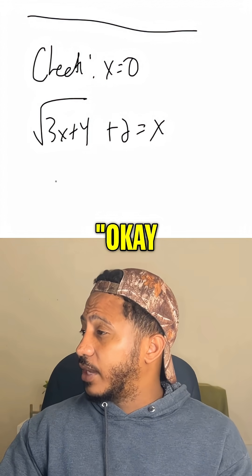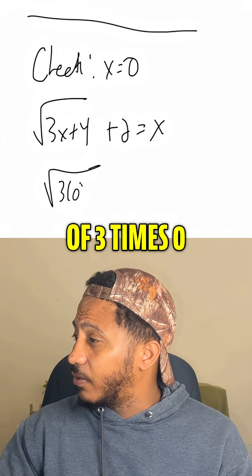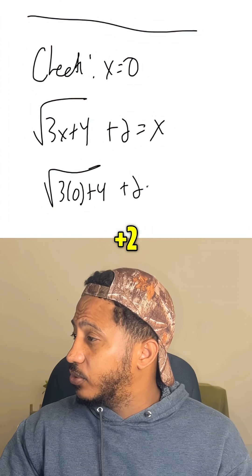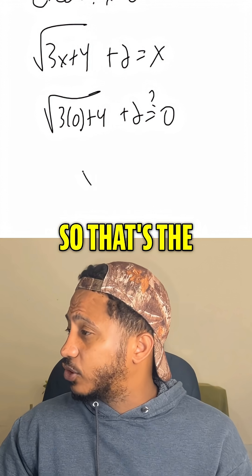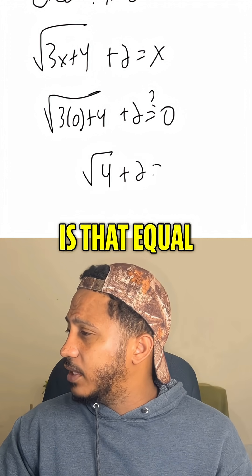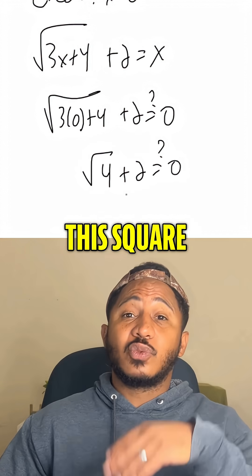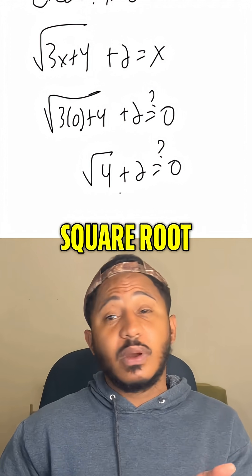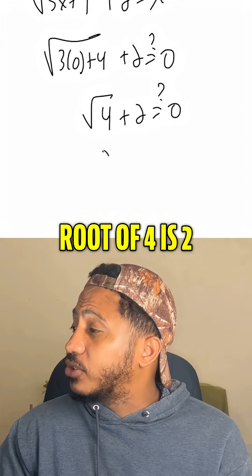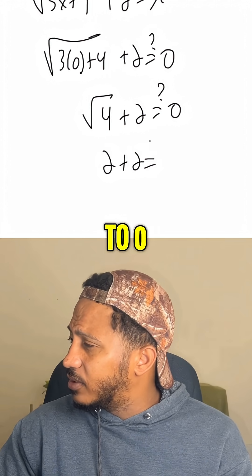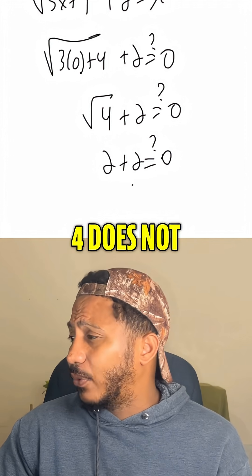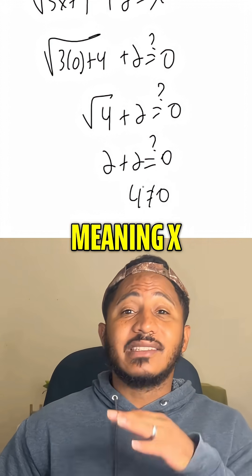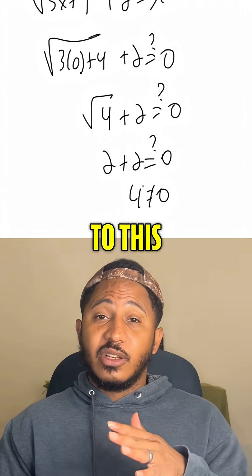So checking x equals 0, we'd say, okay, that's the square root of 3 times 0 plus 4 plus 2. Is that equal to 0? So that's the square root of 4 plus 2. Is that equal to 0? Now, this square root does not have a plus or minus in front. So that's the principal square root, the positive square root, meaning the positive square root of 4 is 2 plus 2. Is that equal to 0? It's just not. Right? 4 does not equal 0, meaning x equals 0 is not a solution to this equation. Okay?